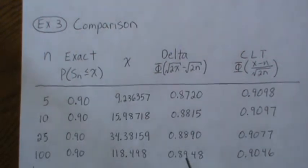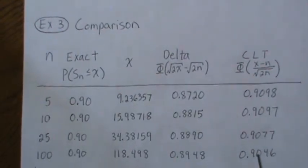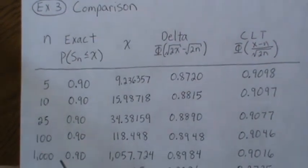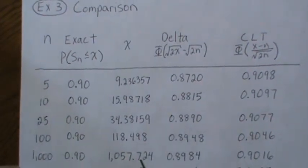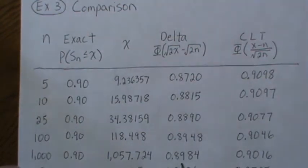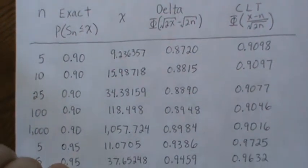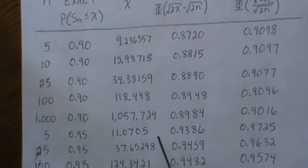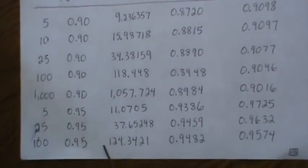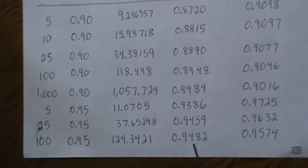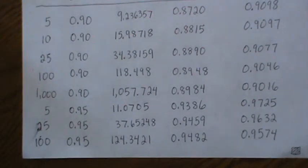We have sample size 100, and the delta method gives us 0.89, closer to 0.9, keeps getting better. A thousand: delta method gives us 0.898, 90%. Then I do it for 0.95, and you can see that as n increases, each method gets more accurate.